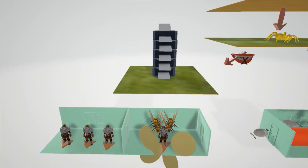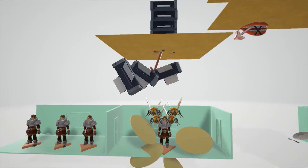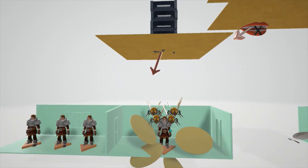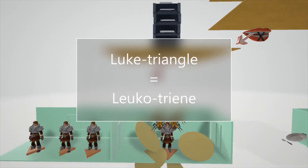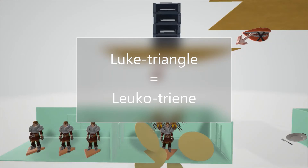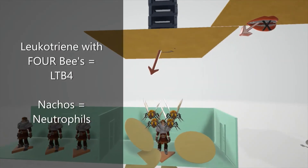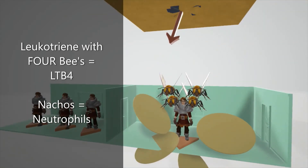After the 5-HP printers are made, the next step produces leukotrienes. Imagine the 5-HP printers falling down and turning into guys named Luke standing on a triangle — 'Luke on a triangle' for leukotriene. There are different leukotrienes to be aware of. We see 4 B's around Luke for leukotriene B4, LTB4.